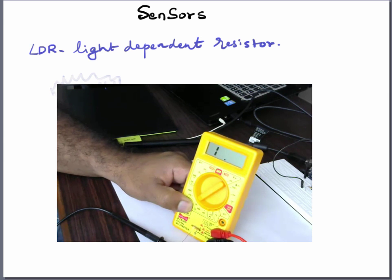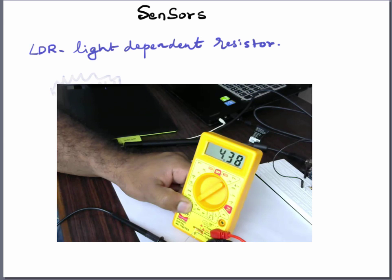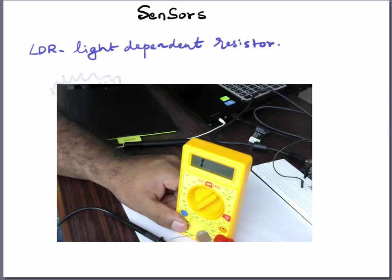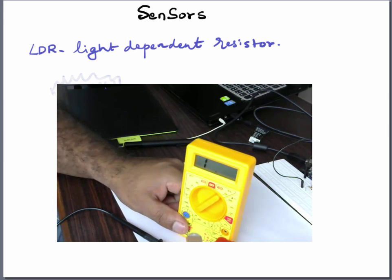So let's switch it to 20 kilo ohms and test it. The value is what it says, so right now it's saying it's about 3.54 depending on the light. So this is the value of the resistance at this amount of light.